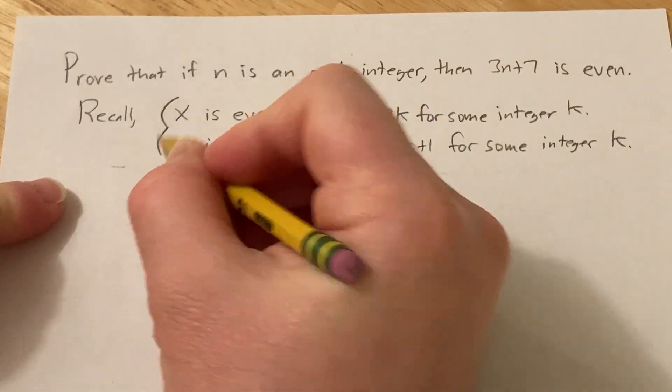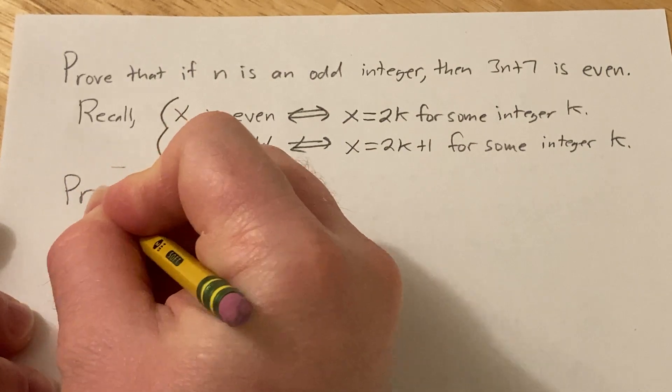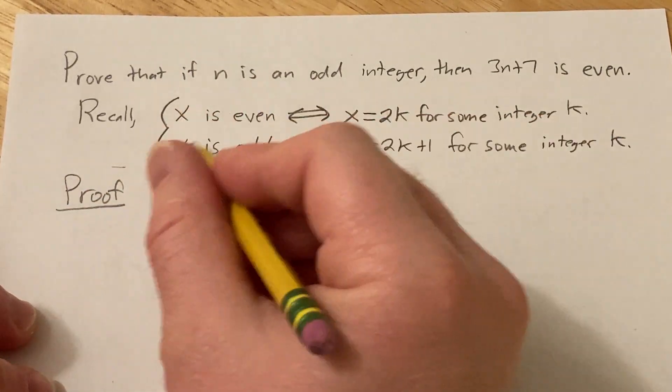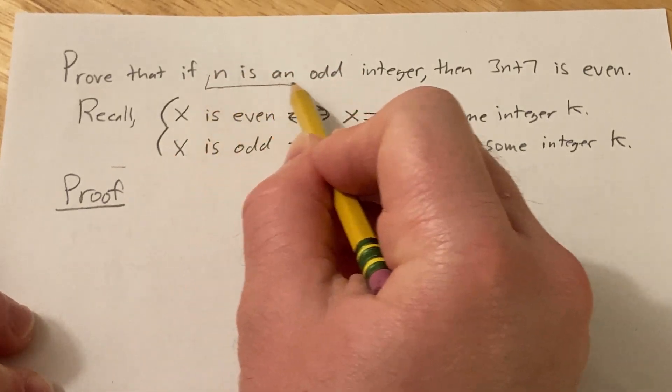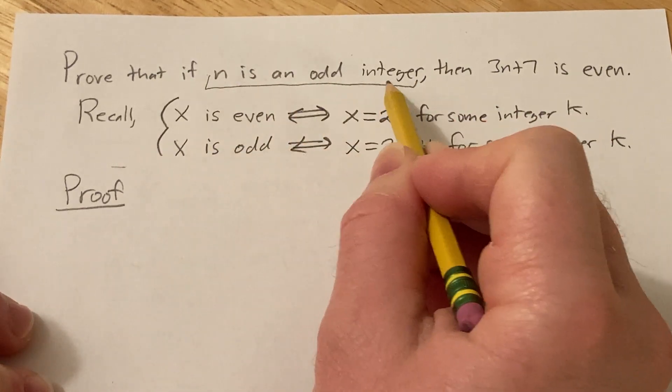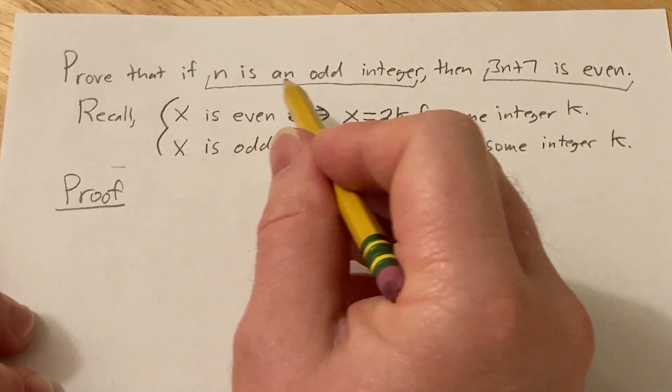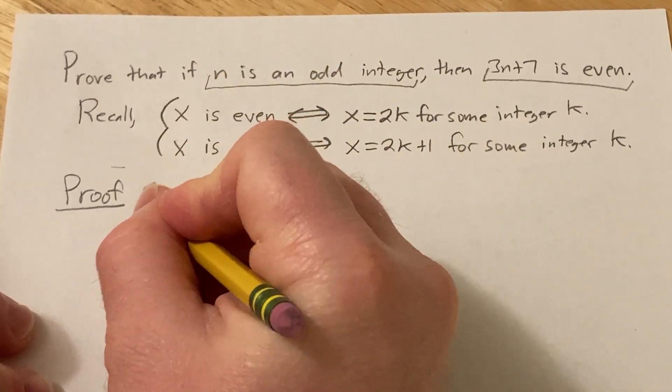So equipped with this, we should be able to do this simple proof. So we're going to give what's called a direct proof. In a direct proof, basically, you assume everything after the if part. So you're allowed to assume that all of this is true, and then you have to show that all of this is true.